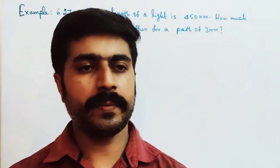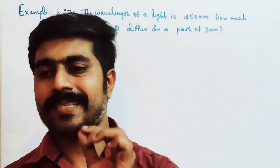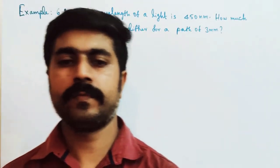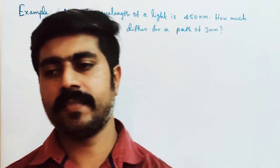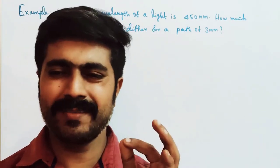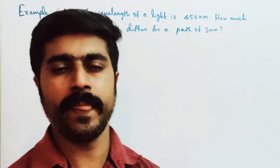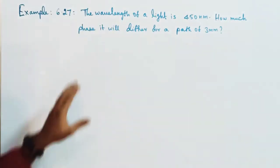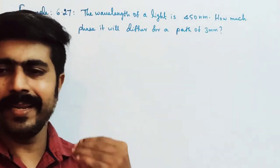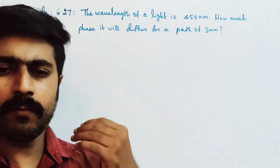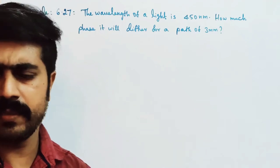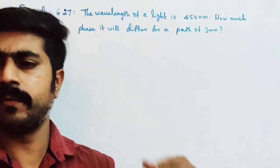Hi students, so now we have a simple problem. 12th physics, optics, 6th lesson — there is a simple problem. Example 6.27. This is a 1 mark, 2 mark, 3 mark problem. But 1 mark, 2 mark.